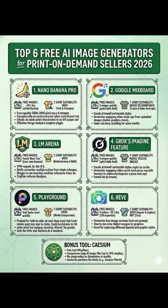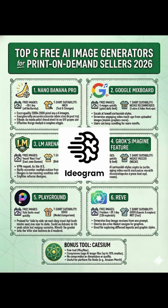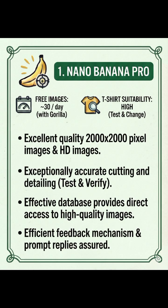My previous top one, Ideogram, is not even on the list — it was overthrown by the text king: Nano Banana Pro. It gives you massive 2000 pixel images and gets complex spelling right on the first try.